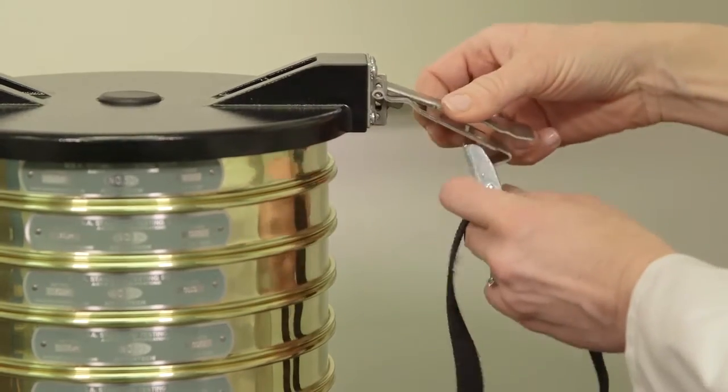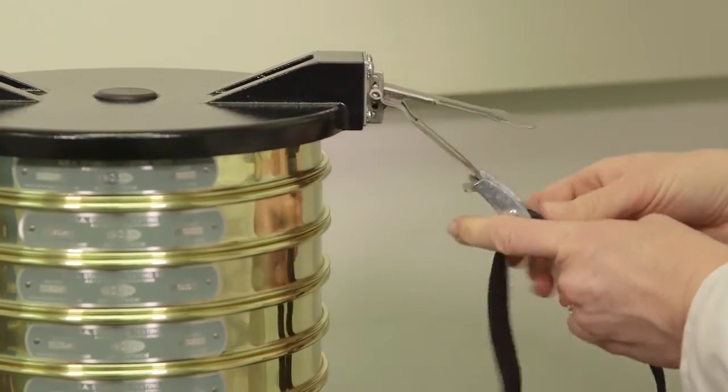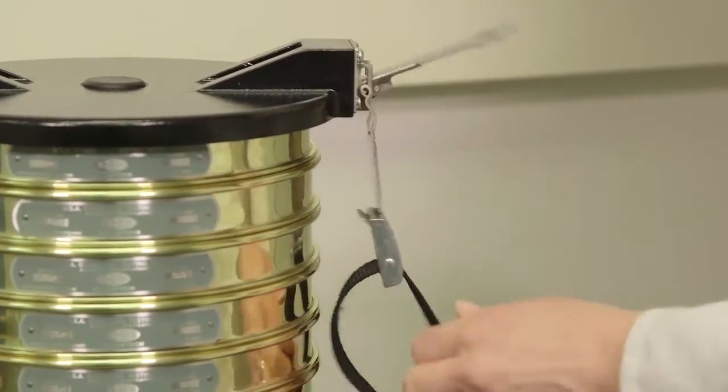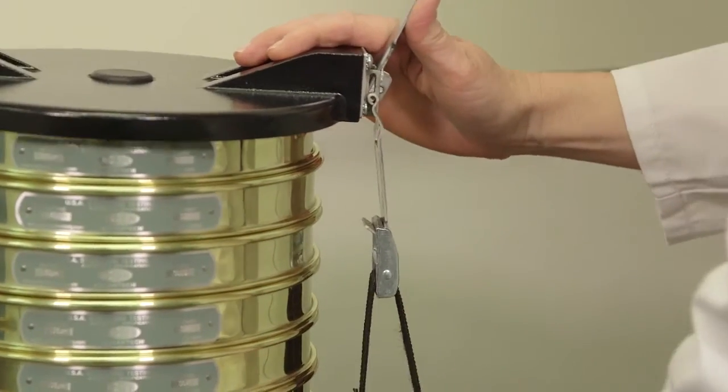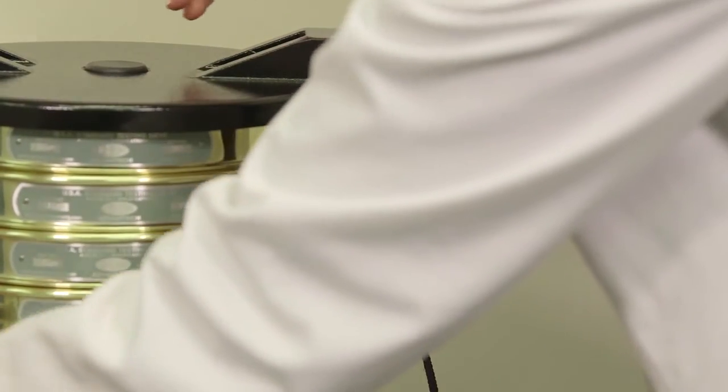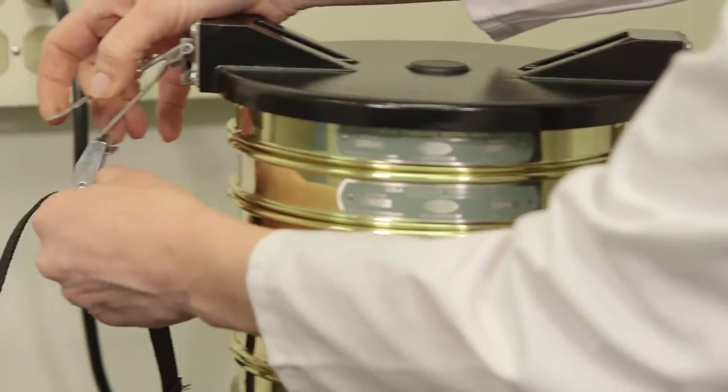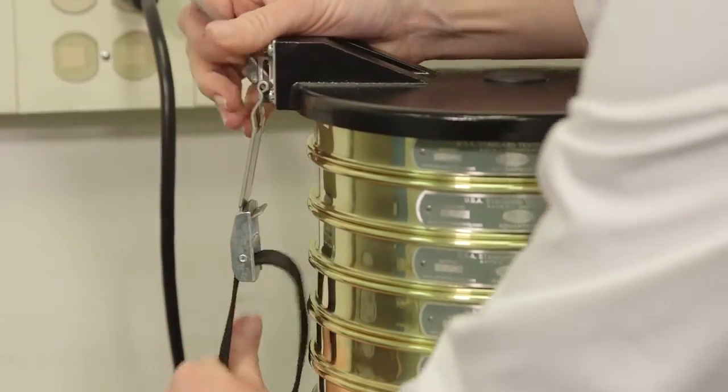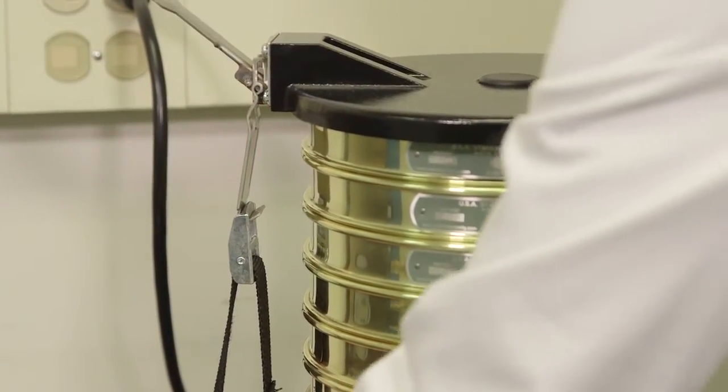Raise the clamping latch lever upwards to expose the latch hook. Hook on the clamping strap and pull to tension. Do not over tension. The clamping latch lever will remain in the raised position. Repeat this process on the other side.